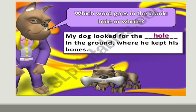Now see the example: which word goes in the blank? 'My dog looked for the ___ in the ground where he kept his bone.' The options are 'hole' and 'whole' — both have the same sound but different meanings and spellings. The answer is: 'My dog looked for the hole in the ground where he kept his bone.'